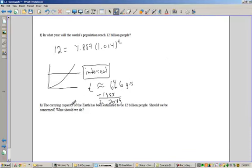And part H, it asks, the carrying capacity of the Earth has been estimated to be about 12 billion people. Should we be concerned? I would say yes. 2049 is within my lifetime. So it's just about, what, 38 years, 37 years away. So I'll be, what, 72. So yes, I'd be concerned.